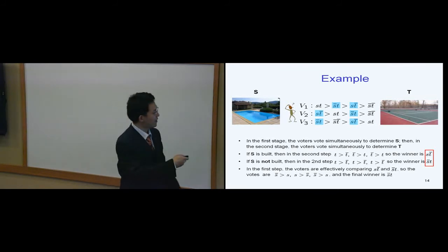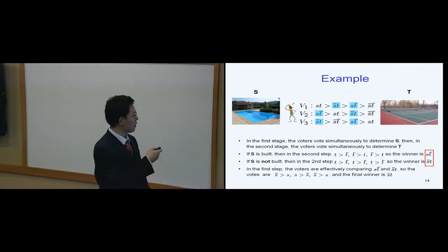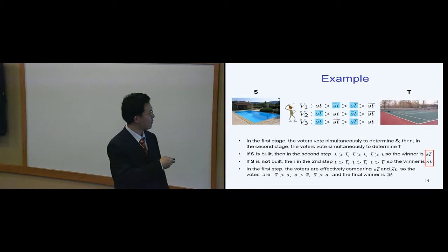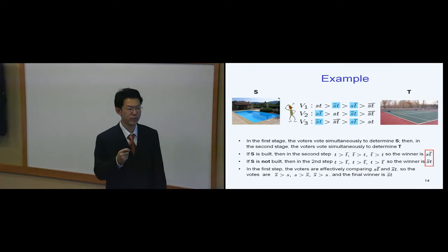So in that sense, I'm going to vote not building the swimming pool, and the second voter will vote to build the swimming pool, and the third voter will vote not building the swimming pool. Then based on the majority rule, the winner should be not building the swimming pool.